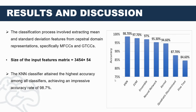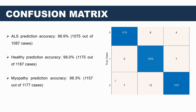Next comes the results and discussion section. To assess the effectiveness of our approach, we conducted a comprehensive comparison between various classifiers. These classifiers were provided with an input matrix of 3,453 by 54. Our evaluation produced a compelling result, as illustrated by the graph, clearly demonstrating that the KNN classifier outperformed all others, achieving an impressive accuracy of 98.7%. Through the confusion matrix, for ALS our model achieved an accuracy of 98.9%, for healthy subjects it was 99%, and for myopathy prediction the accuracy stood at 98.3%, highlighting the efficiency of our proposed system.